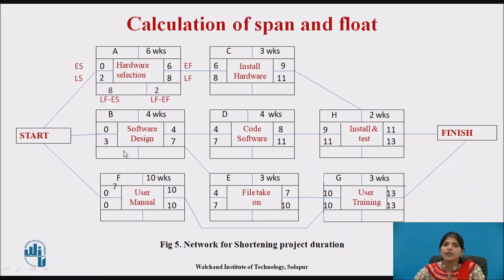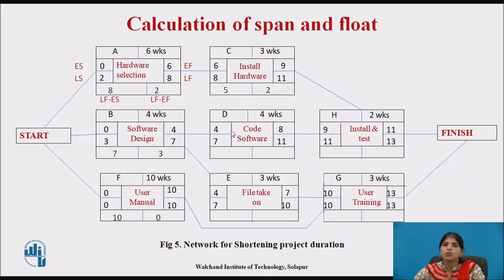For the next activity: span is 7 minus 0 giving 7, and float is 7 minus 4 giving 3. Another activity: span 10 minus 0 giving 10, float 10 minus 10 giving 0. Then 11 minus 6 gives 5; 11 minus 2 gives 9 with float 2; 11 minus 4 gives 7 and 11 minus 8 gives float 3. Then 10 minus 4 gives 6 and 10 minus 7 gives float 3.